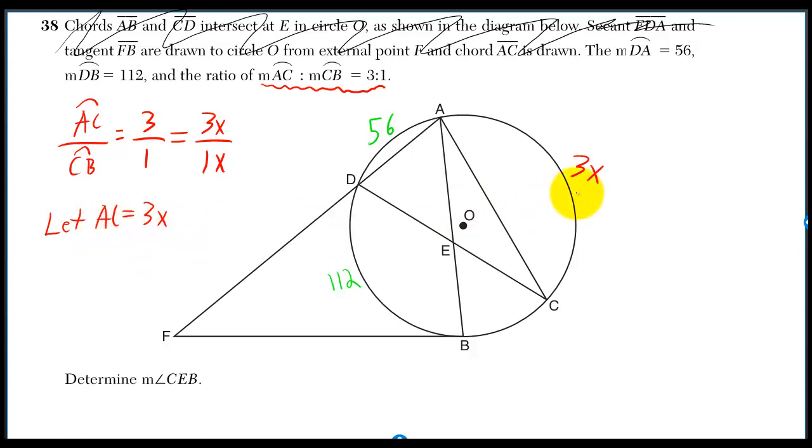So if we let AC equal 3X, then CB would have to be 1X. Again, this reduces to 3 over 1. This trick works with any ratio. So if I gave you a ratio of 4 to 7, you could let the first thing be 4X and the second thing be 7X.